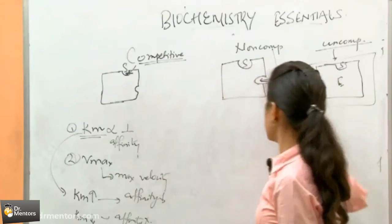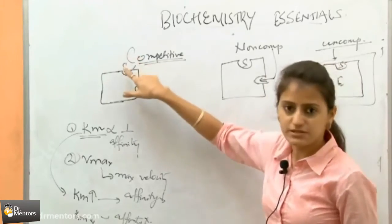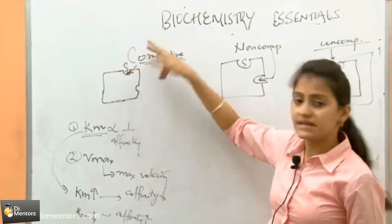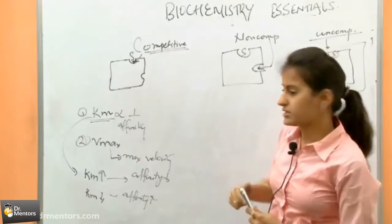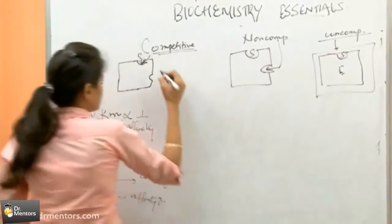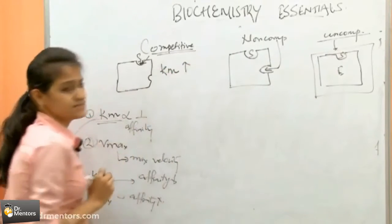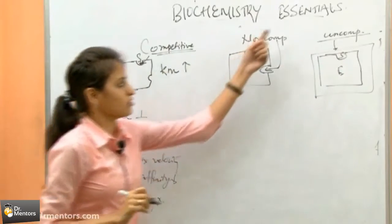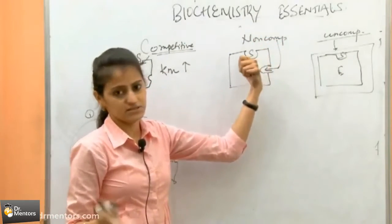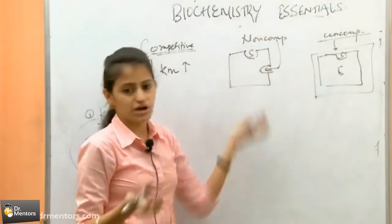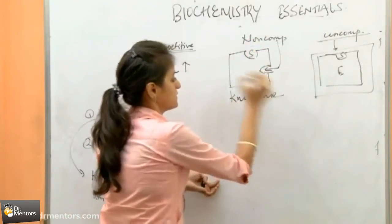Competitive inhibition is competing with the substrate, and that is why it decreases the affinity of the substrate for the enzyme — so affinity is decreasing and Km is increasing. In non-competitive inhibition, the inhibitor is not binding to the substrate site, so the affinity is not affected and Km remains the same.